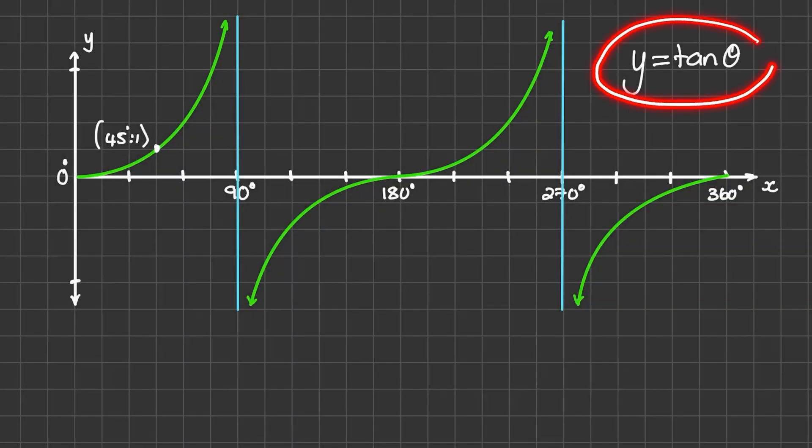Next, we have the graph of the tangent of theta. Notice that the graph has two asymptotes at 90 degrees and 270 degrees. What it means is that at these values, the tan of theta would never intersect or touch these lines.